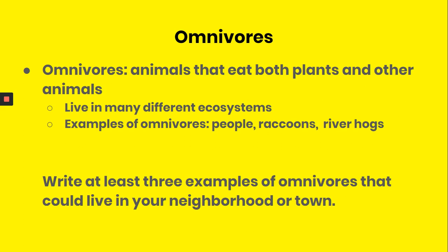Now let's look at omnivores. Omnivores are animals that eat both plants and other animals. They also live in different ecosystems, such as rainforests or deciduous forests. Examples of omnivores are people, raccoons, and river hogs.